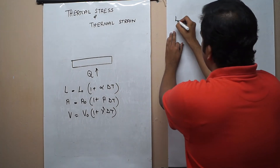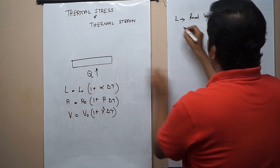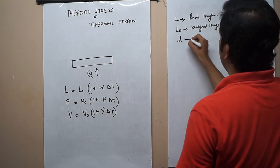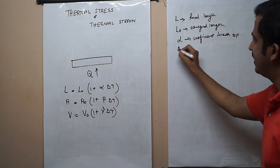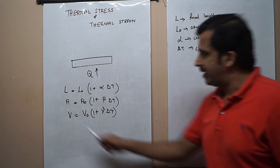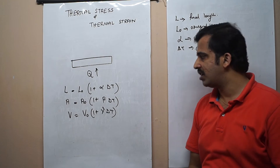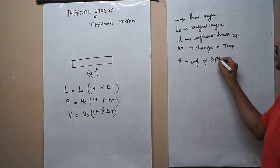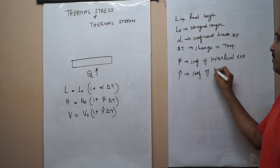Here, capital L means the final length after the application of heat. L₀ indicates the original length. Alpha (α) indicates the coefficient of linear expansion. Delta T (ΔT) is the change in temperature. A is the final area, V is the final volume, A₀ is the original area, and V₀ is the original volume. Beta (β) is the coefficient of area expansion or superficial expansion, and gamma (γ) is the coefficient of volume or cubical expansion.